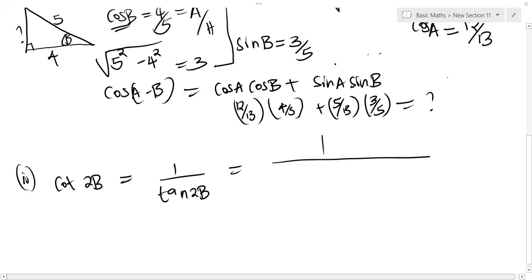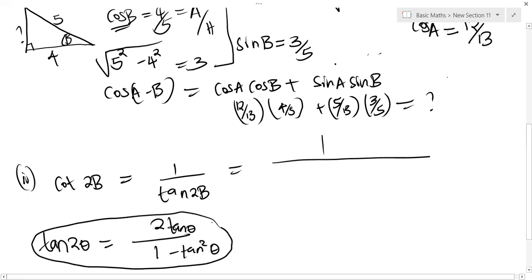Now from the SMP, we know that tan 2 theta is equal to 2 tan theta over 1 minus tan squared theta. So we're going to use this identity here to replace tan 2B. So 1 over 2 tan B, all this divided by 1 minus tan squared B.